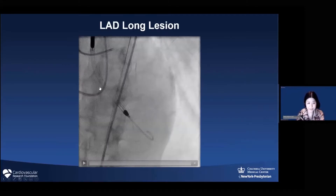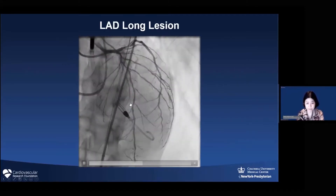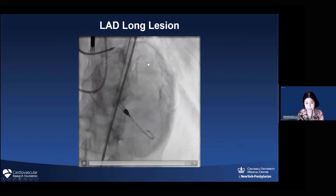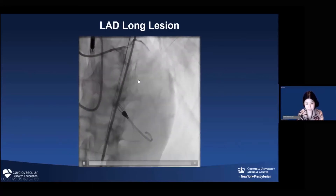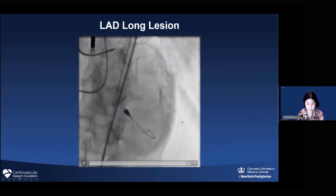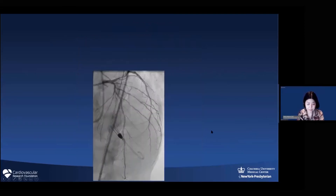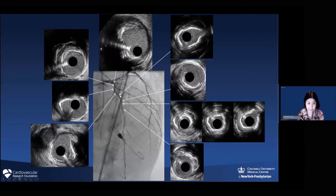Let's look at this case. You can see a super diffuse LAD lesion with a lot of lung involvement, and you have almost no idea of the vessel size because of the diffuse disease. But there is a very clear route. So let's show the IVUS in each segment and measure the vessel diameter.